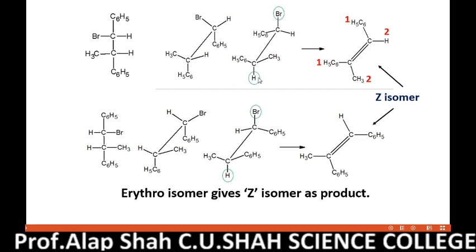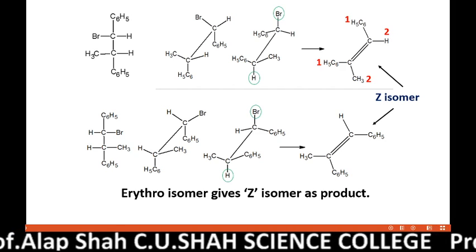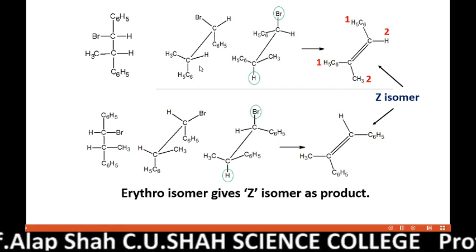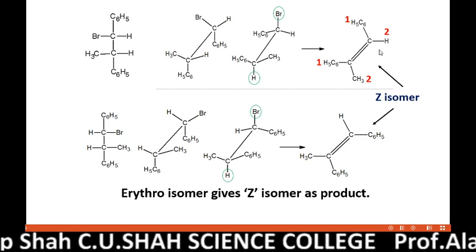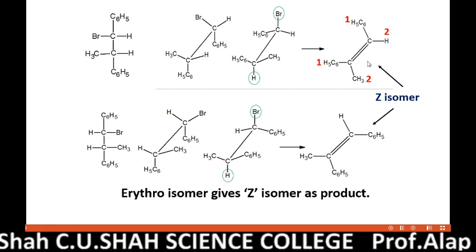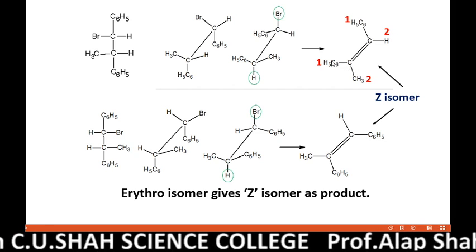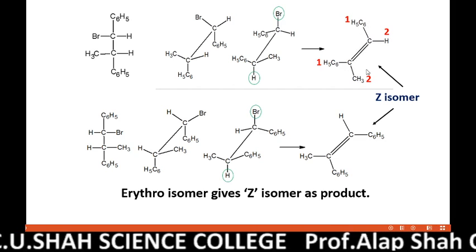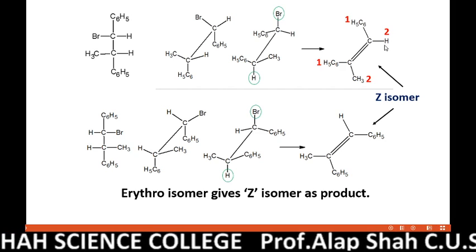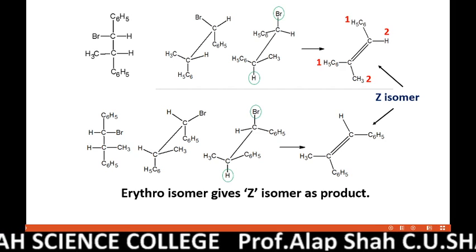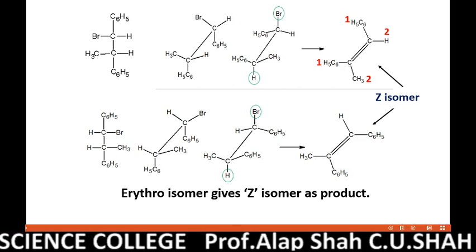Now E2 elimination takes place, a new double bond forms between these two carbons, and we get the Z isomer. To both carbons one group is common — phenyl — but the other groups are different: methyl and hydrogen. So we cannot say they are cis or trans; in such case we use the term Z isomer or E isomer.